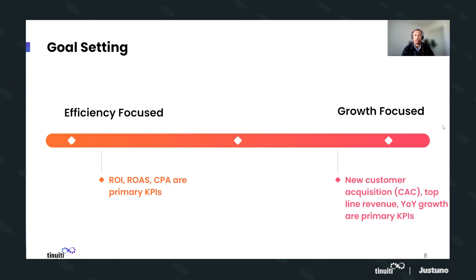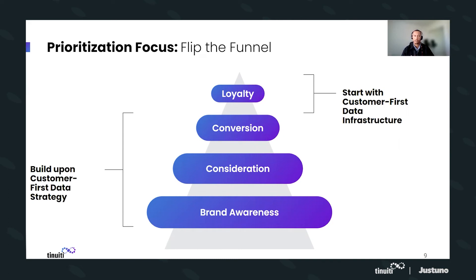On the flip side, the growth-focused advertiser is going to be focused on new customer acquisition — often measured as CAC — top line revenue, and year-on-year growth. These are things you'll be evaluating to measure success as you aggressively acquire new customers and hyper-drive your top line. We always talk about media and marketing as a funnel, and I love the concept of flipping the funnel and placing the primary focus on loyalty, because in the traditional marketing funnel, loyalty and re-engagement sit down at the bottom — but it's exceedingly important to start there.